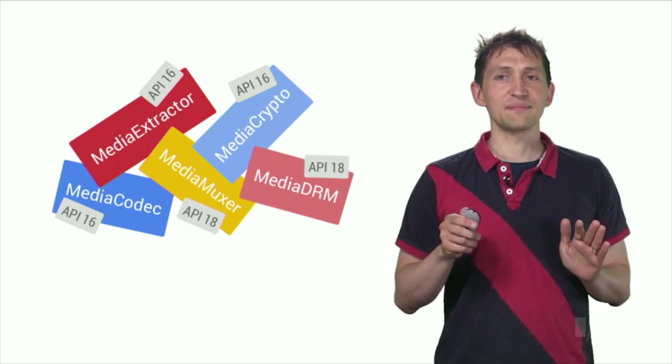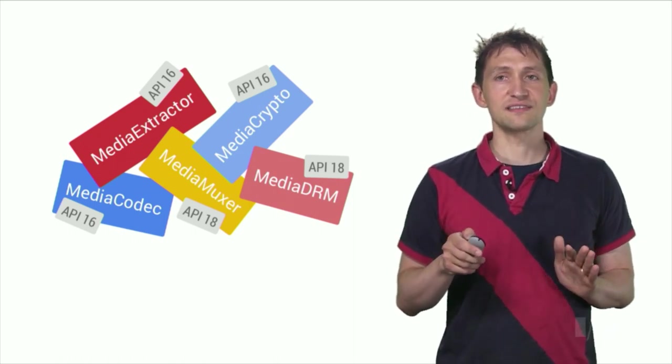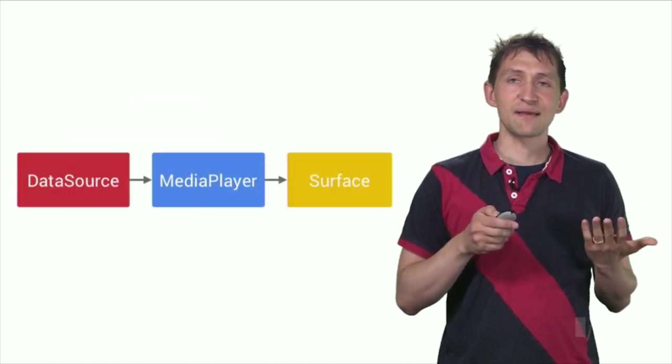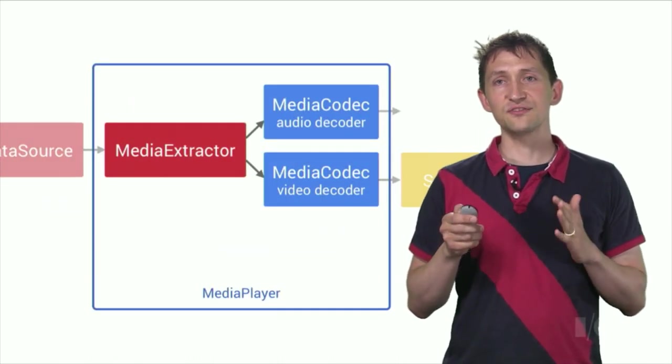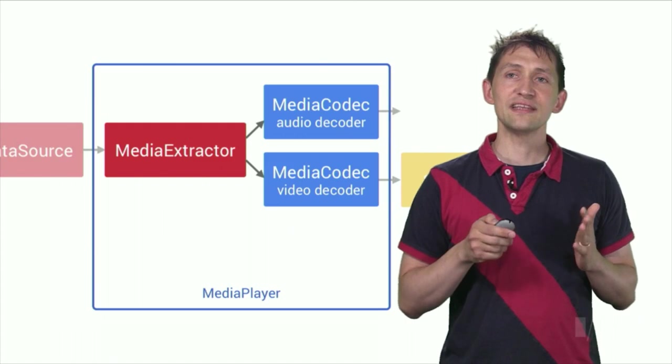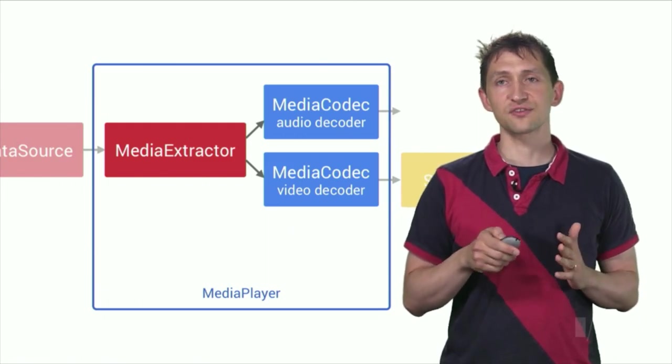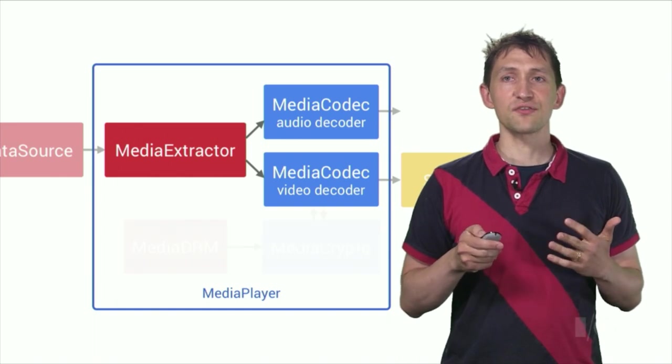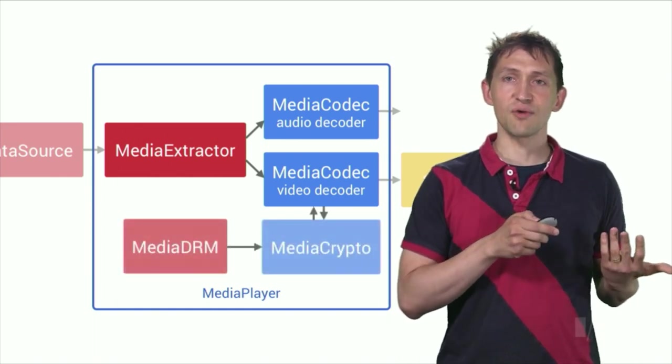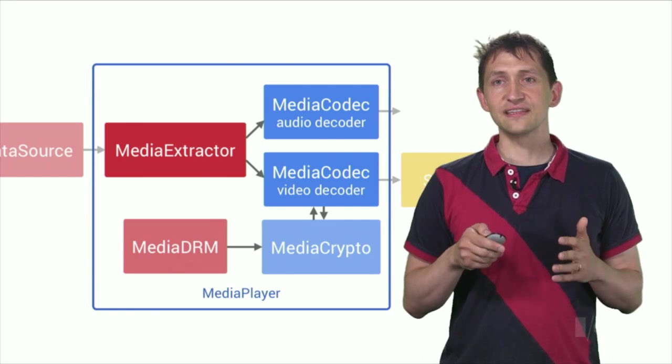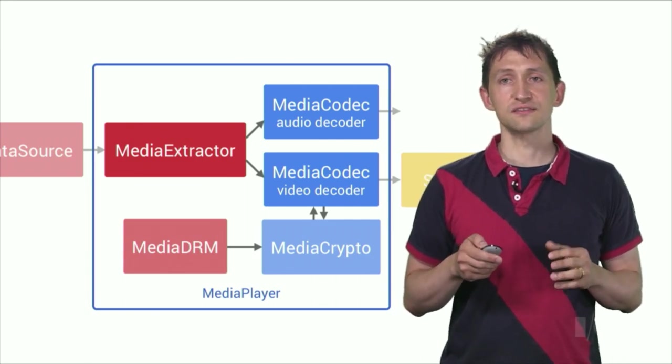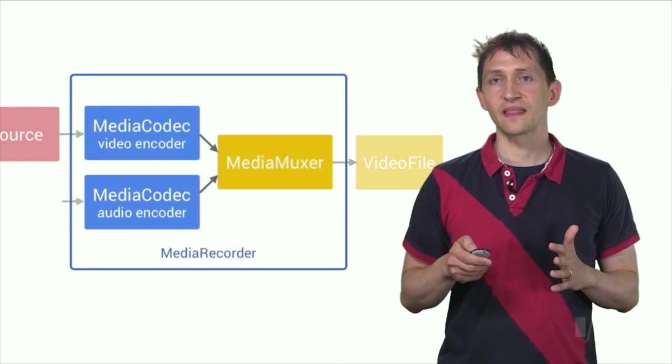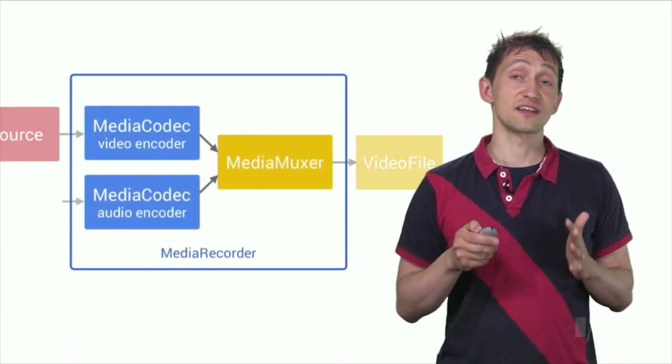You can do everything that Media Player and Media Recorder does using the low-level APIs. I know it because we did it. For example, to build a Media Player, you need two Media Codec objects and a Media Extractor to parse the individual audio and video packets out of the data source. To play back secure content, you will need a Media DRM object to manage the secure session, and you will need to provide the Media Crypto object to the video decoder. You can implement Media Recorder using two Media Codecs and a Media Muxer.